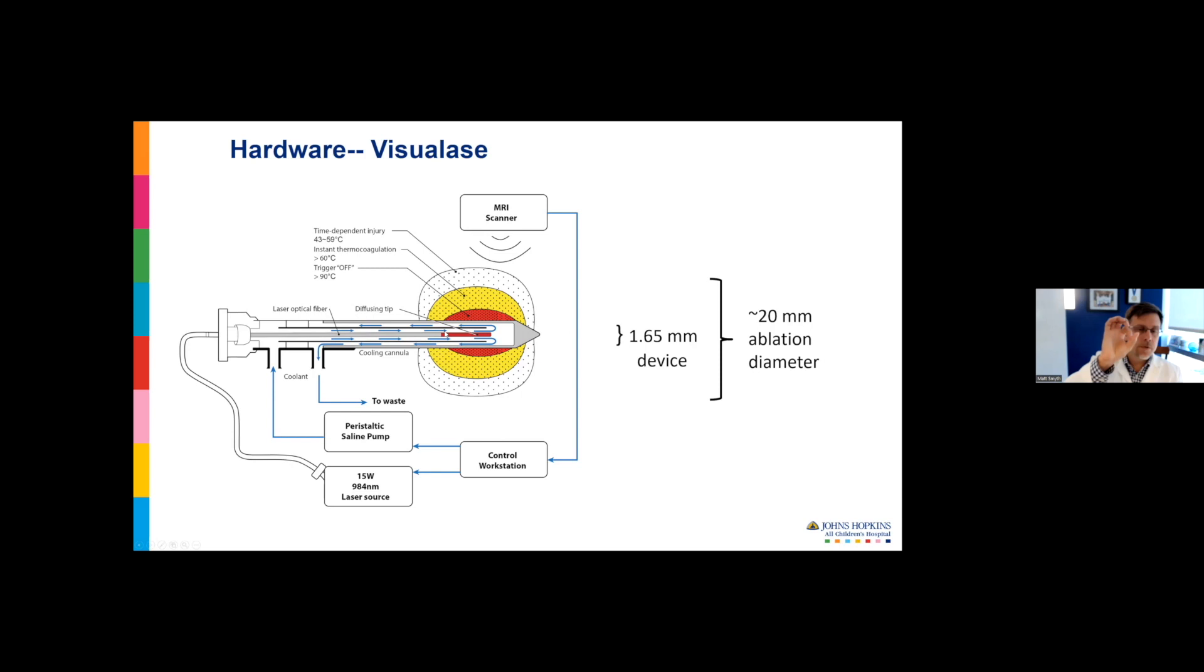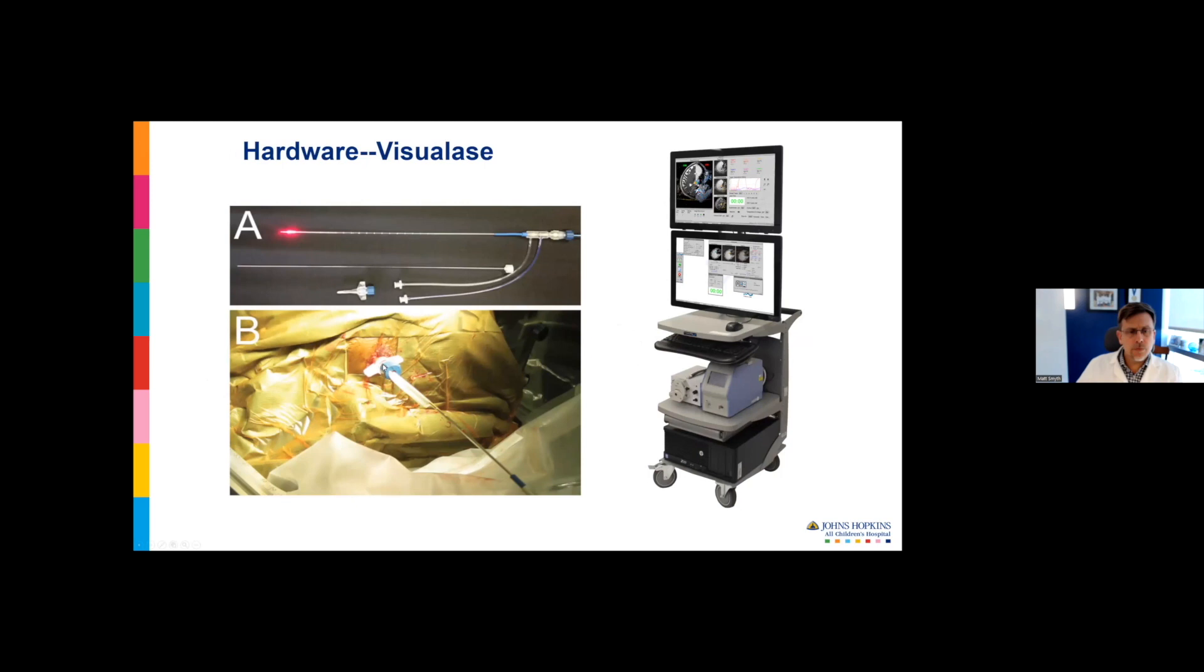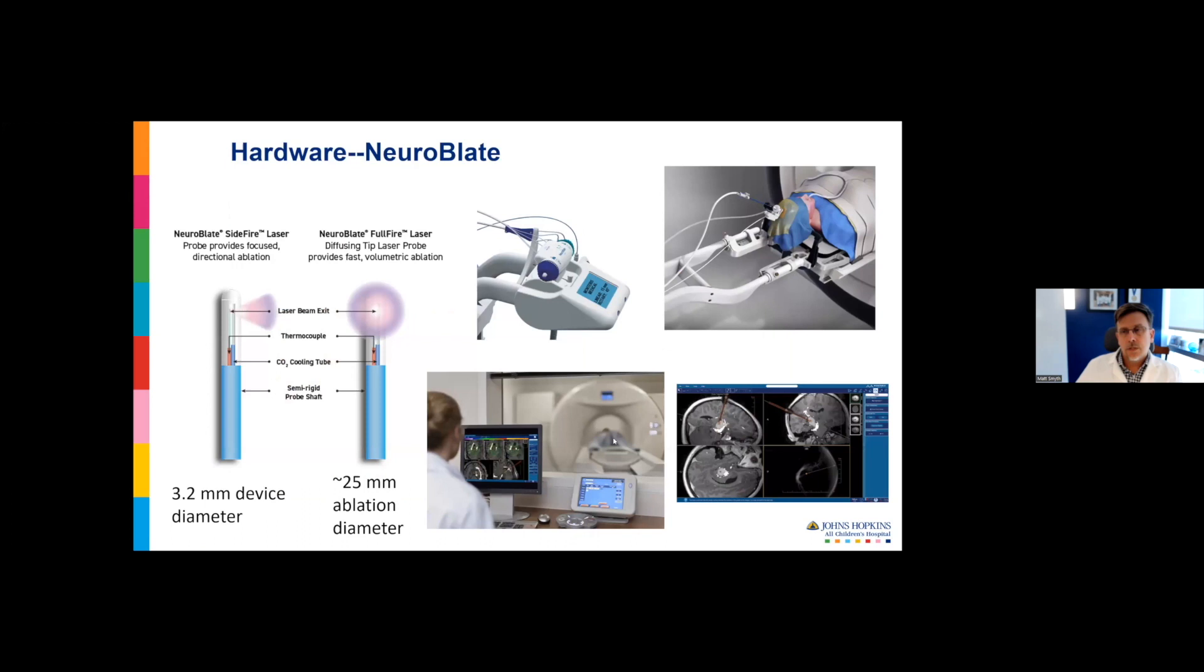The Visualase system is deployed through these MRI compatible bolts, either plastic or titanium. A twist drill is performed along the trajectory of interest, and then the bolt is threaded down into the bone. Through the hollow bolt, you pass the Visualase fiber and secure it in place with this collar. The system is deployed with a cart-based mobile system, which is handy because you don't require a full installation in your MRI scanner.